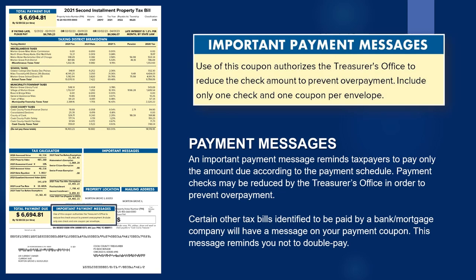An important payment message reminds taxpayers to pay only the amount due according to the payment schedule. Payment checks may be reduced by the Treasurer's Office in order to prevent overpayment. Certain other tax bills identified to be paid by a bank or mortgage company will have a message on your payment coupon reminding you not to double pay.